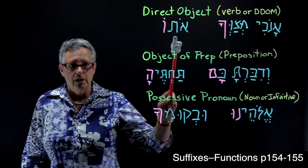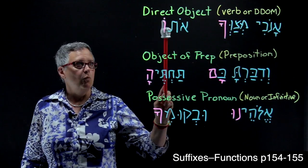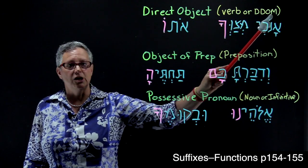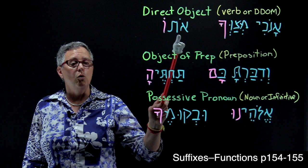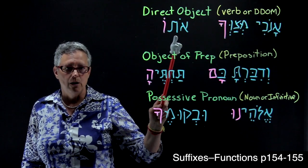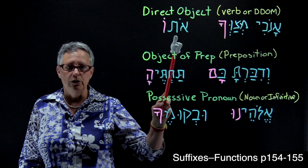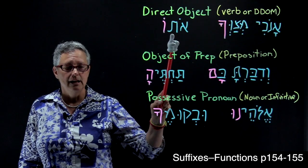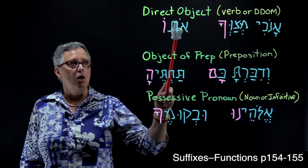This example shows what it looks like when a suffix is attached to a definite direct object marker. Oto. Notice that the vowels are different from what you might have expected. We usually see the definite direct object marker as et. In this case, it's oto.